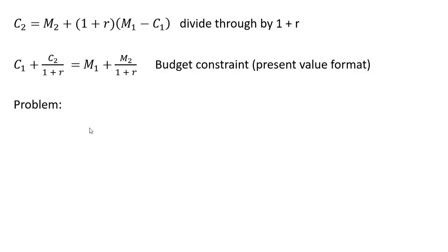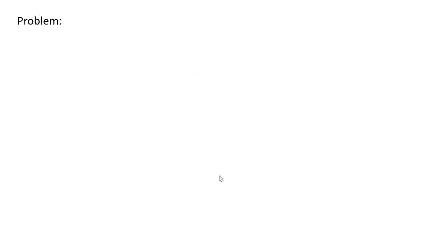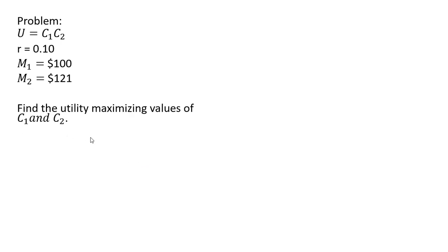Let's do a numerical problem. Here is our utility function. We'll specify the interest rate at 10%, and we're given income in period 1 and income in period 2. We want to find the utility-maximizing values of C₁ and C₂. To do that, we first need to get the marginal utility of the composite good in period 1 by taking the partial derivative of the utility function with respect to C₁, which gives us back C₂.